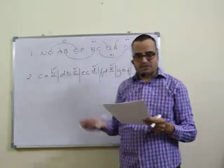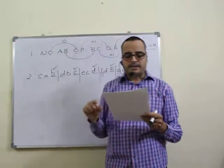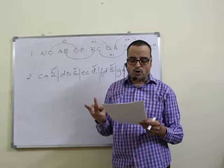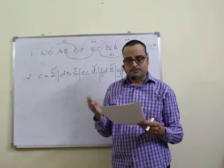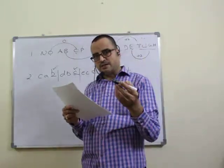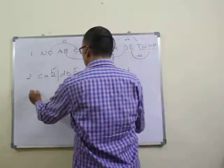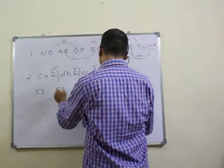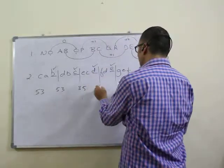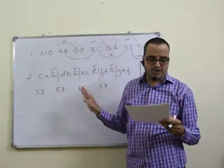Question three and four: study the given numerical and answer the following. Question three asks how many fives are either followed or preceded by three. Counting through — five three... five three — total four times. So the third question answer is second option: four times.